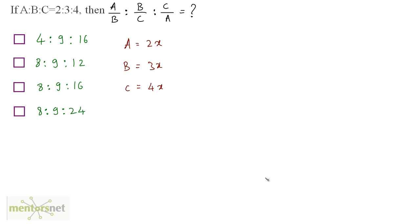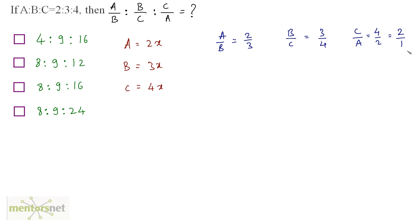Now you have the values of a, b and c. You can always calculate a by b, b by c and c by a. So a by b is equal to 2x by 3x which is 2 by 3. b by c is equals to 3x by 4x which is 3 by 4, and c by a is equals to 4x by 2x which is 4 by 2, which is 2 by 1. So a by b is to b by c is to c by a is equals to 2 by 3 is to 3 by 4 is to 2 by 1.